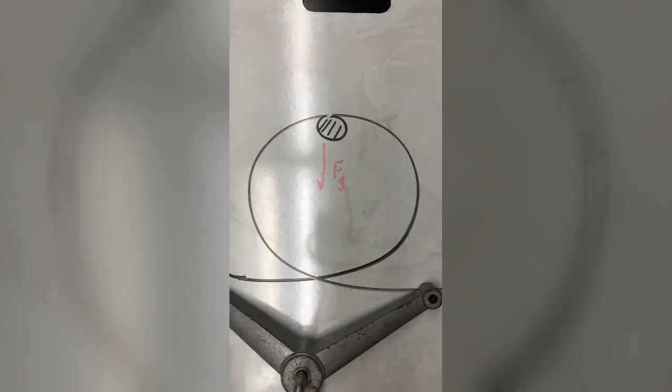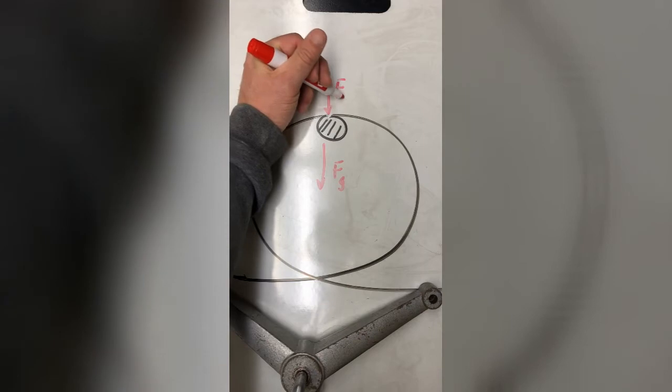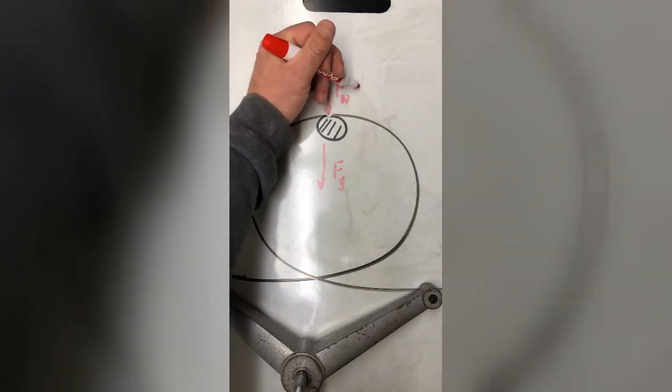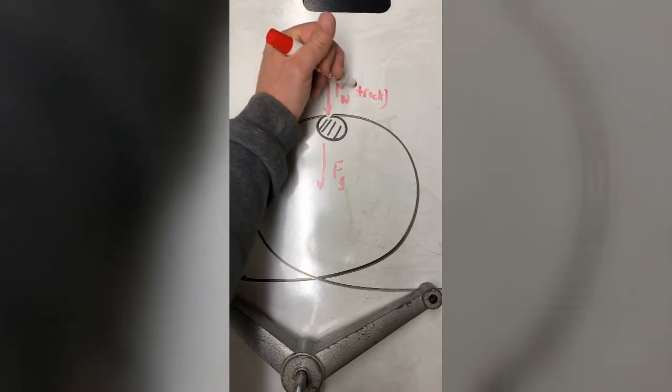In one sense no, in the other sense yes we could say the track is. We see that the ball is underneath the track and the only thing that the track could do to it is push it downward. Now you might call that the normal force, in fact I'm gonna call it the normal force.